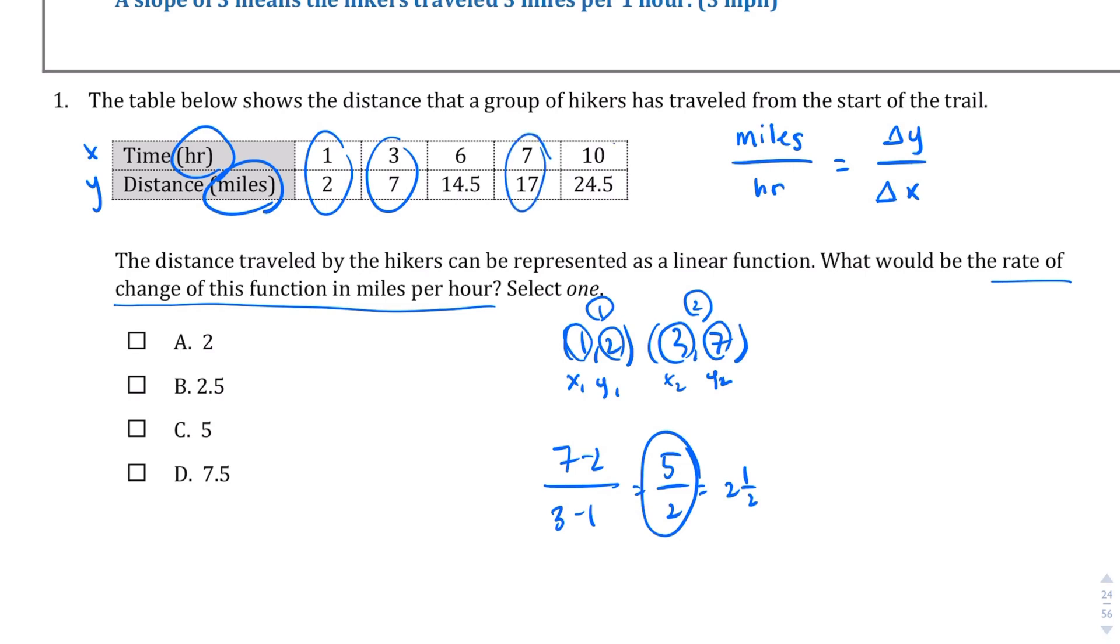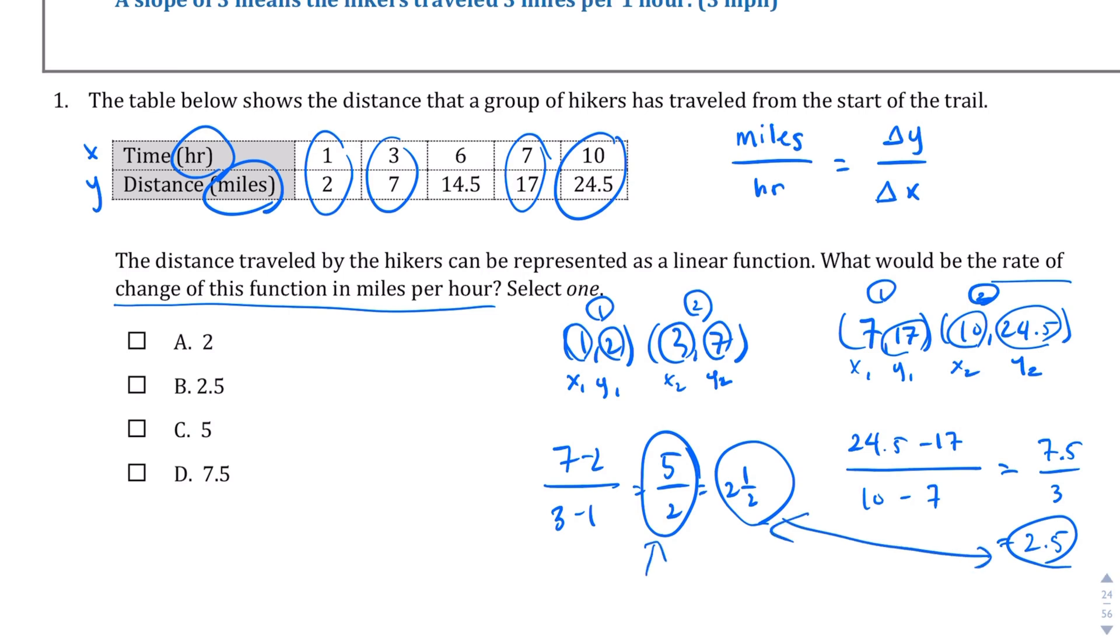Let's try these two points here. So let's compare 7, 17 to 10, 24.5. I don't really like that decimal, but let's just go with it. Let's call this point 1, let's call this point 2: x1, y1, x2, y2. So again, the slope formula says it's y2 minus y1. So 24.5 minus 17 over 10 minus 7. 24.5 minus 17 is going to give us 7.5 over 10 minus 7, which is 3, which will end up giving us 2.5, which is what we have here, right? So I know I circled this one, but let's go with the 2.5. And sure enough, 2.5 is one of our answers, so we're going to label this, we're going to call this b. So that is the rate of change of this function in miles per hour, 2.5 miles per hour.